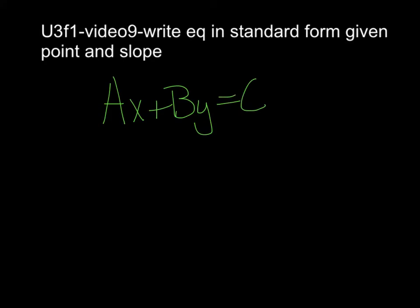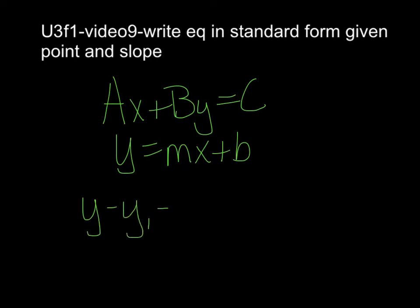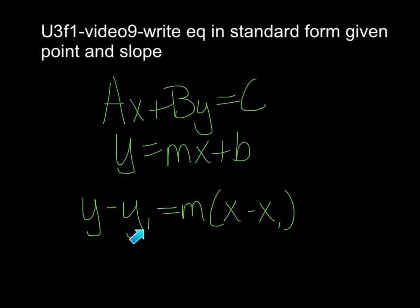Now when we're given a point and a slope, we have a different formula. You guys remember slope-intercept form. We have a different one — it's called point-slope form. Stuff should look familiar. Your m is still slope, and your x1 and y1 come from the point.